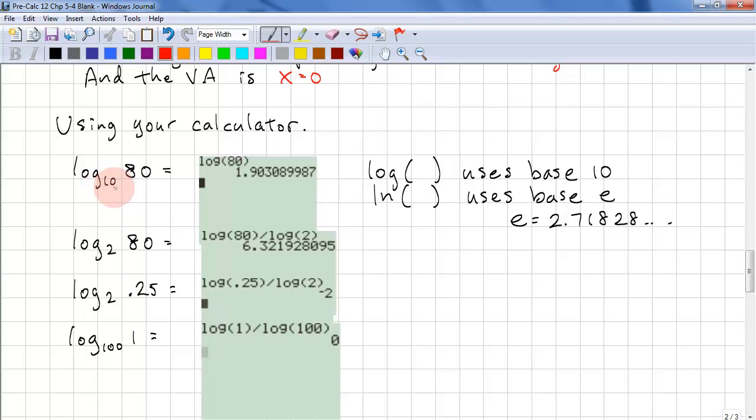If we want to calculate log 10 of 80, we just do log 80 on our calculator, and we get 1.9. If we want to do log base 2 of 80, we need to do log 80 divided by log 2 on our calculator, and this will give us 6.3. If we want to do log 2 of 0.25, we need to do log 0.25 divided by log 2, and this gives us a value of negative 2. Log 100 of 1 is 0. You don't need to divide by log 100, but you can do it anyways. Because log 1 equals 0, and if you divide that by any other log, it's still going to be 0.